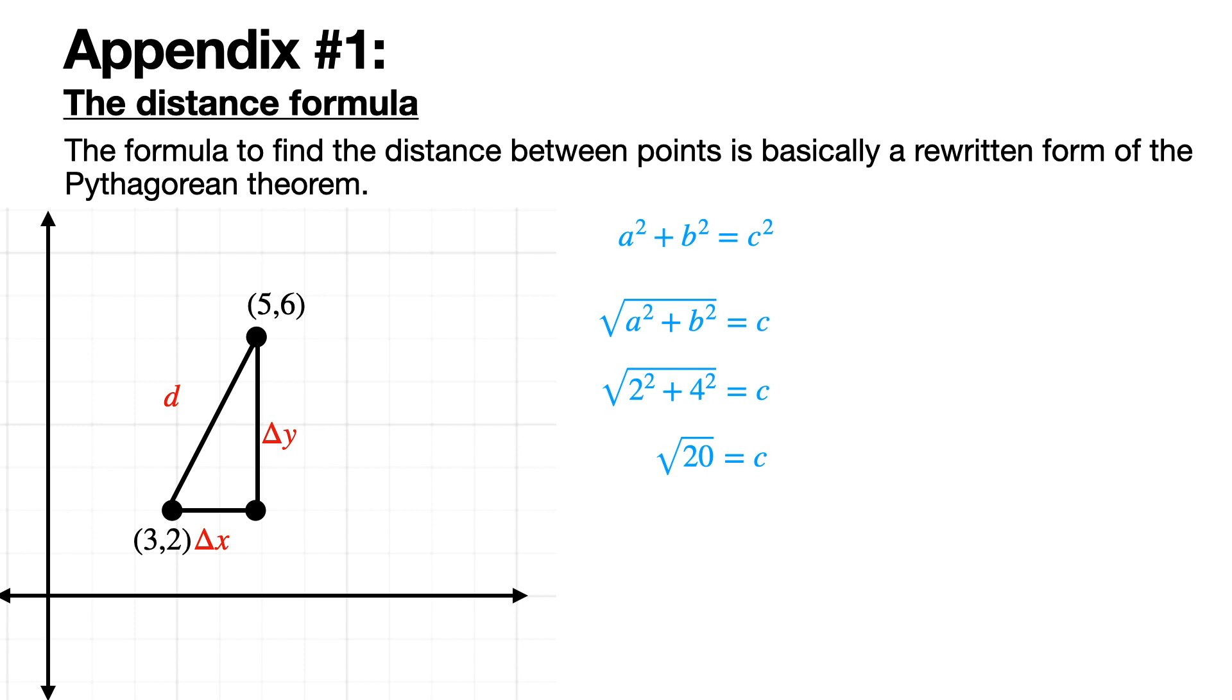What if instead of calling it by a, b, c, or by two, four, and whatever the answer is, we called it delta x, delta y, and d. Delta in math means change. The change in x is literally the distance of the bottom side of that triangle, and delta y is the distance of the vertical side. If we took the square root of both sides, we would get what is essentially the distance formula.